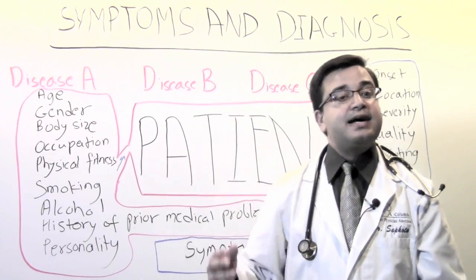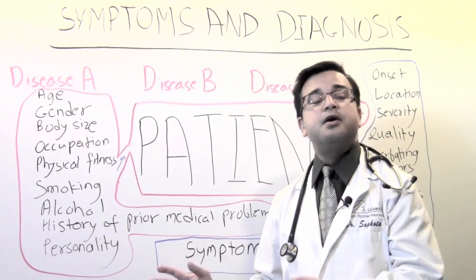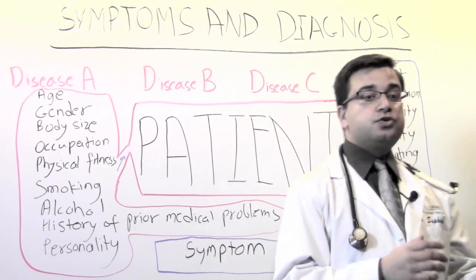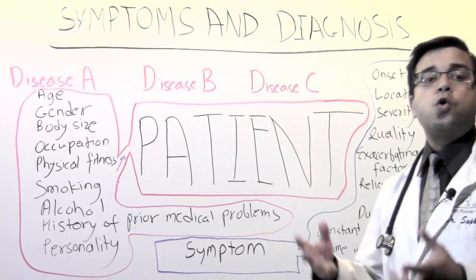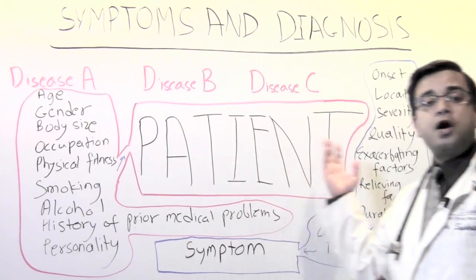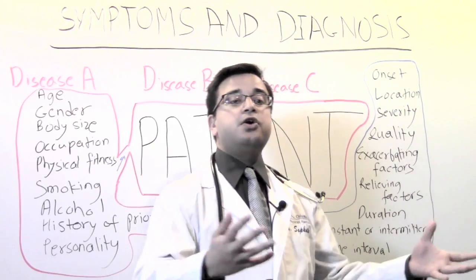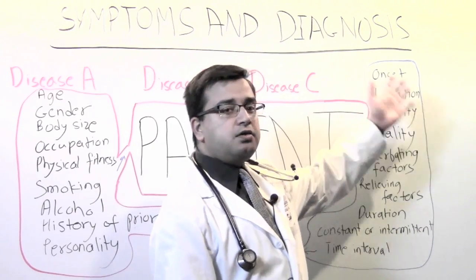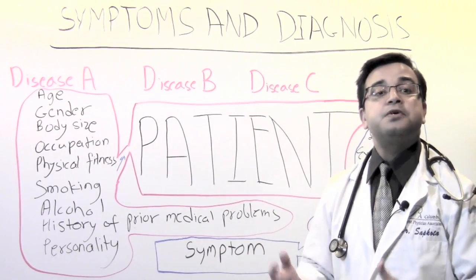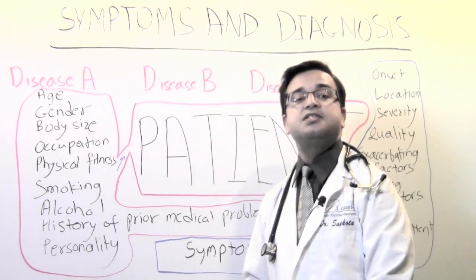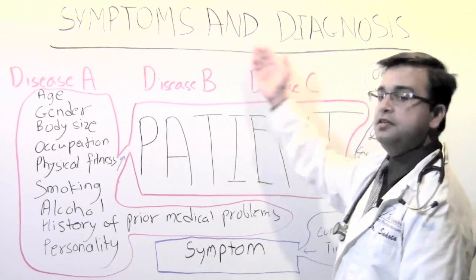After you know your patient very well, you move on and analyze that particular symptom in detail — not just take that symptom at face value to make the diagnosis. You ask where exactly it started, what kind of pain it was, what made it worse, what made it better, how long it lasted, and whether it was constant or intermittent. All these details and the patient factors give us a picture and help us decide what could be going on inside the patient's body — and this is how we make the diagnosis.